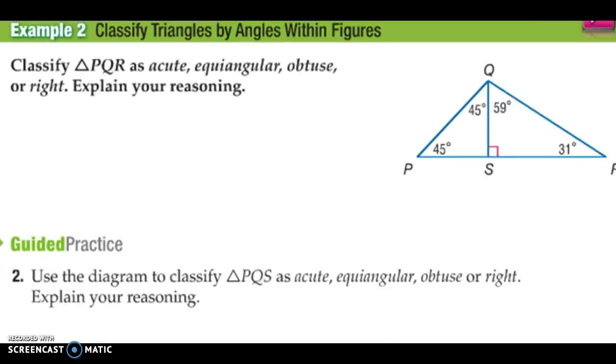Now, example 2. It says, classify triangle PQR as acute, equiangular, obtuse, or right, and then explain your reasoning. So if I look at triangle PQR, I'm looking at the whole triangle itself.